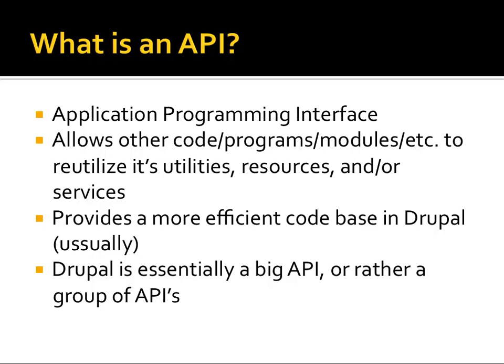So what is an API? An API is an application programming interface, and it really covers everything nowadays — from something like the Twitter API, which is a web service that allows you to interact with their data through your software, to an actual API within code, like the Views API or the database API in Drupal, that allows you to interact with other code and have your code play nice with it.